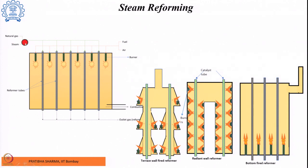Now let us look at the main process of steam reforming. When the feedstock used is methane, it is known as steam methane reforming; otherwise it is known as steam reforming. In this process, preheated natural gas along with steam at a pressure of 2 to 2.5 MPa is passed into the reformer, where there are catalyst-filled tubes. The reaction between methane and steam occurs to produce the required syngas, and we get the reformate gas.